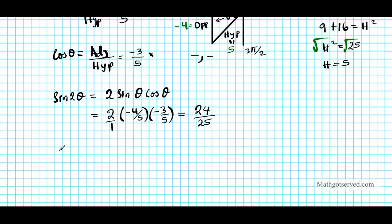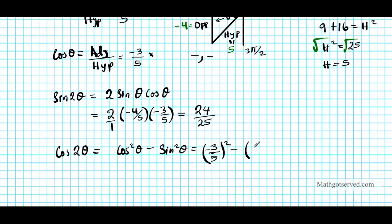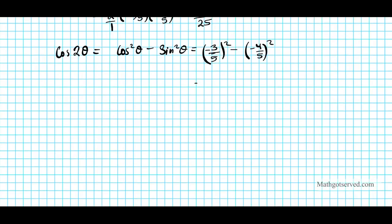For cosine 2θ, using cos²θ − sin²θ: (−3/5)² − (−4/5)² = 9/25 − 16/25 = −7/25. So cosine 2θ = −7/25.